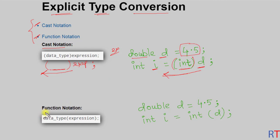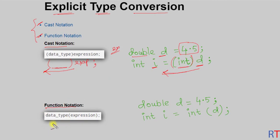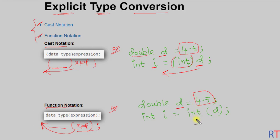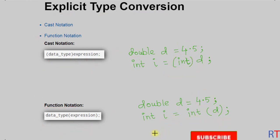Next we are going to talk about function notation, where the data type is outside the parenthesis and the expression goes inside the parenthesis. This way we can explicitly convert from one data type to another. For example, here we have one double variable 'd' which has a value of 4.5, and we are using the function notation where the data type is outside the parenthesis and the expression is inside the parenthesis, converting from double data type to one integer data type.